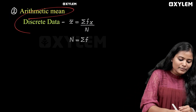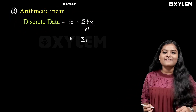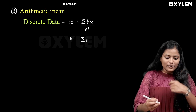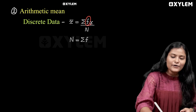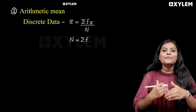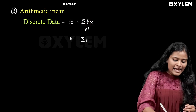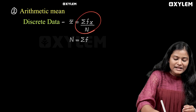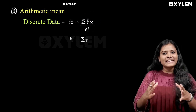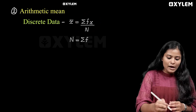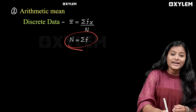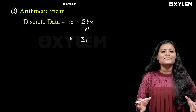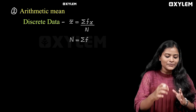When we are coming to discrete data, we are coming to frequency f. So x-bar is equal to summation fx divided by capital N. Capital N is equal to total frequency, that is, summation f.